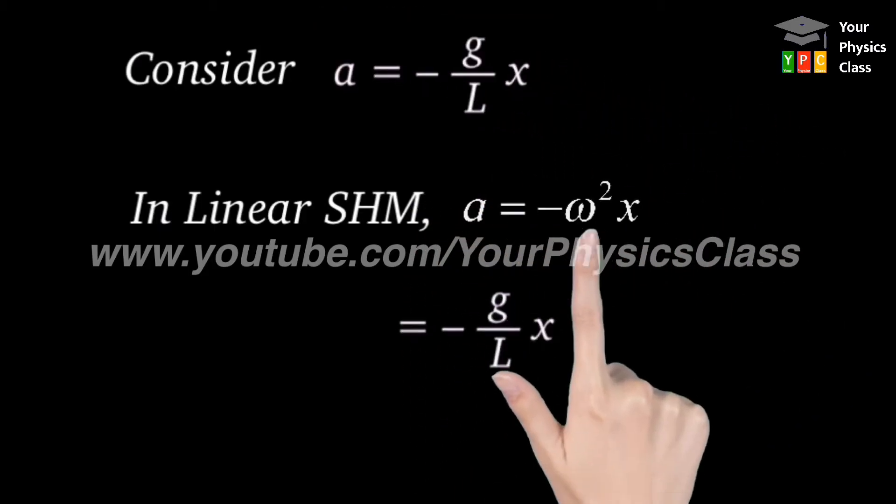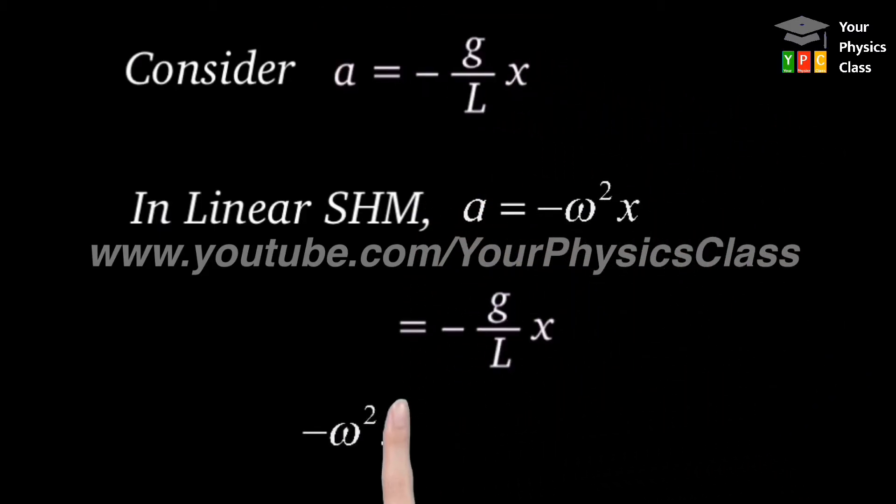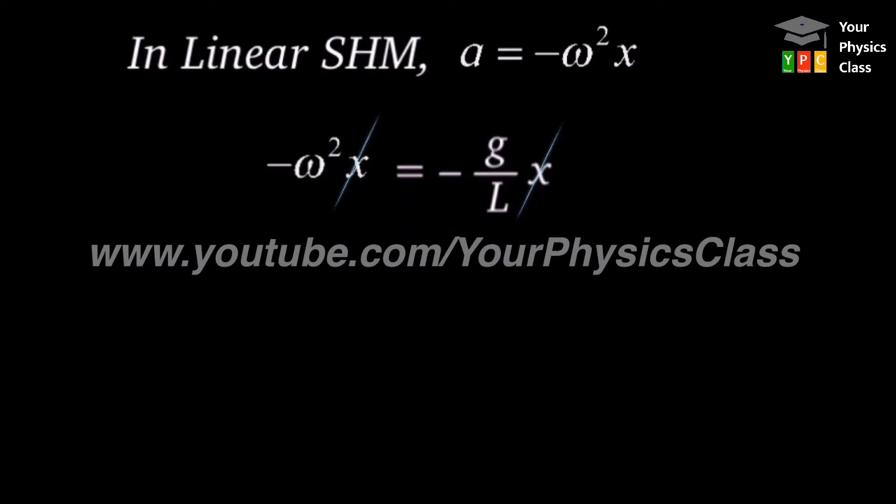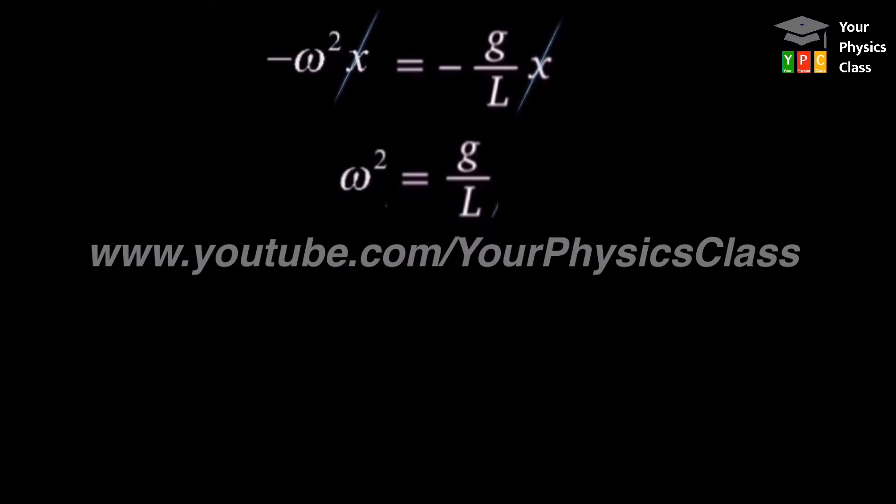Now cancelling like terms from both sides we get omega square equal to g by L. Taking square root, we get the value of omega.